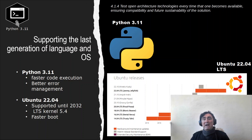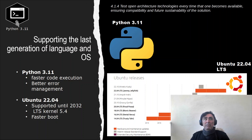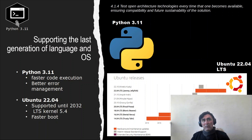That means it's going to be supported up to 2032 and will have updates for at least five years. It has a new kernel and faster boot. We are really confident that Python 3.11 and Ubuntu 22.04 will offer the best of everything, including the ability to run on several devices like the Raspberry Pi.